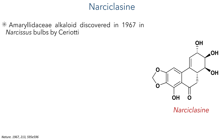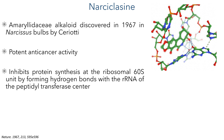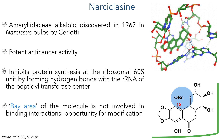Narcyclazine was first discovered in 1967 in Narcissus bulbs by Seriotti and was shown to have potent anti-cancer activity. It works by inhibiting protein synthesis at the ribosomal 60S unit by forming hydrogen bonds with the RNA of the peptidyl transferase centre. These hydrogen bonds form with the hydroxyl groups on the outer rim of the molecule, leaving the inner bay area free from modification, such as in this example where they install a benzyloxy group at the 10 position.